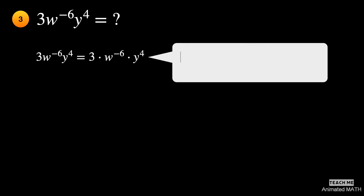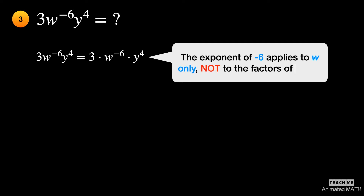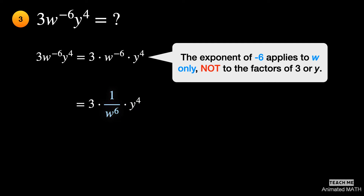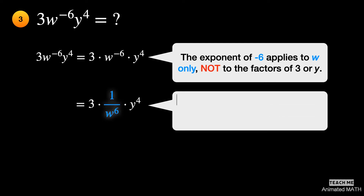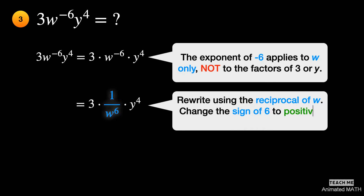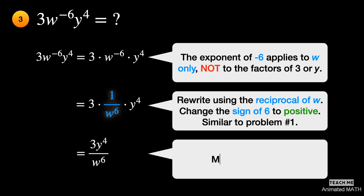The exponent of negative 6 applies to w only, not to the factors of 3 or y. Rewrite w to the negative 6th power as 1 over w to the 6th power. Simplifying it will show 3y to the 4th power over w to the 6th power.